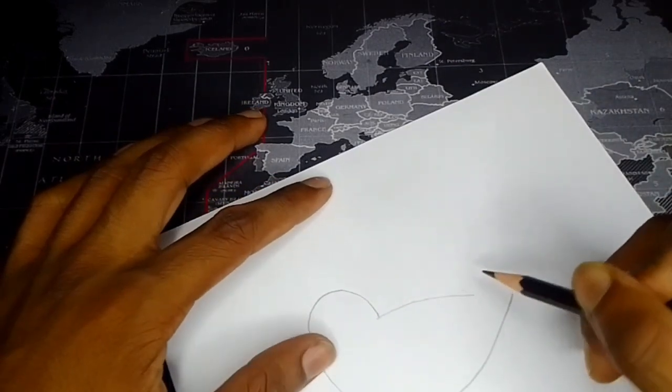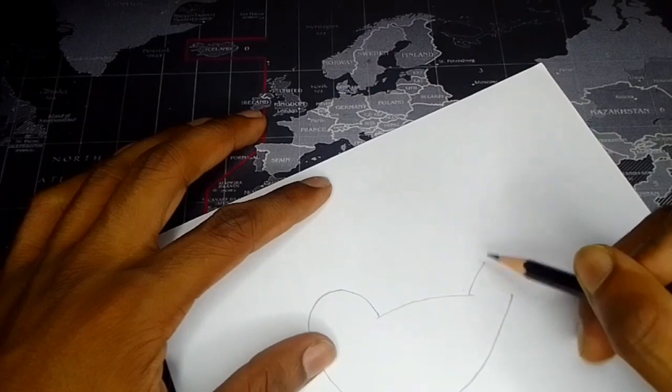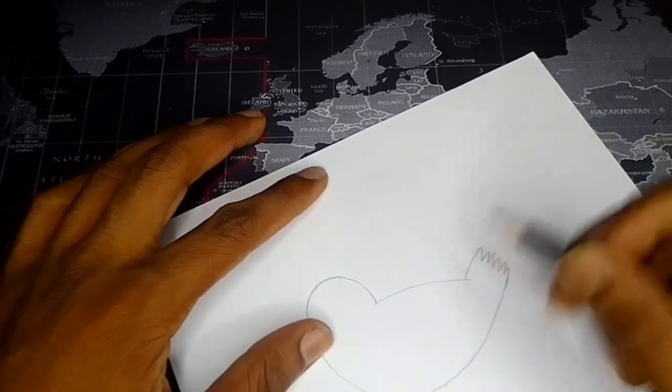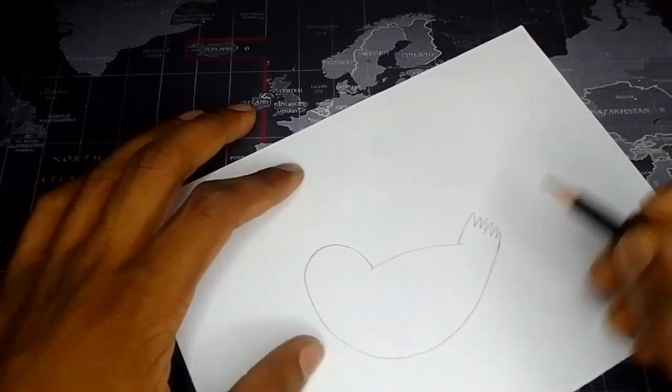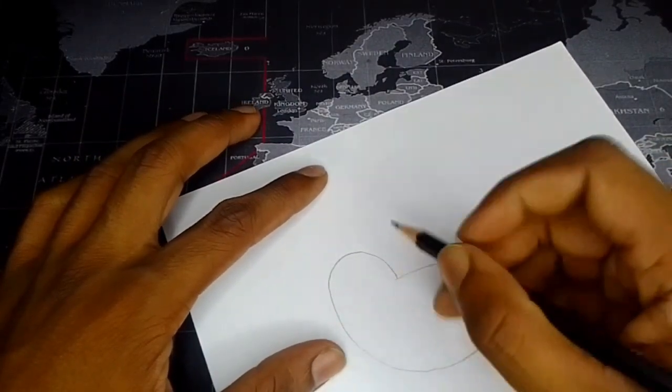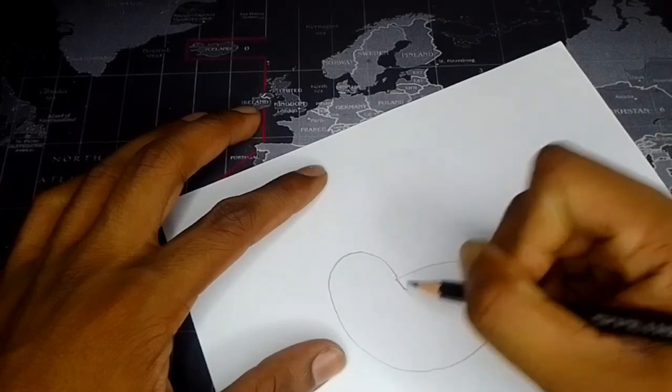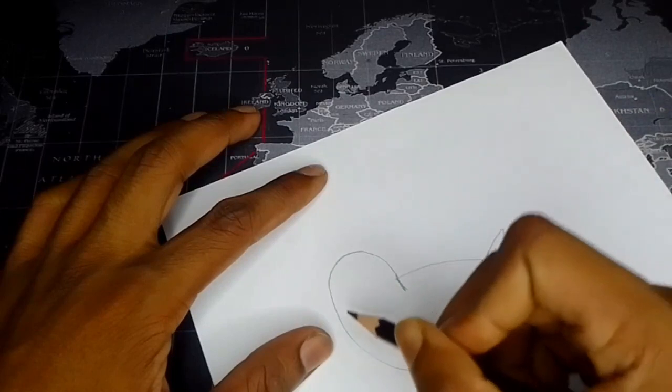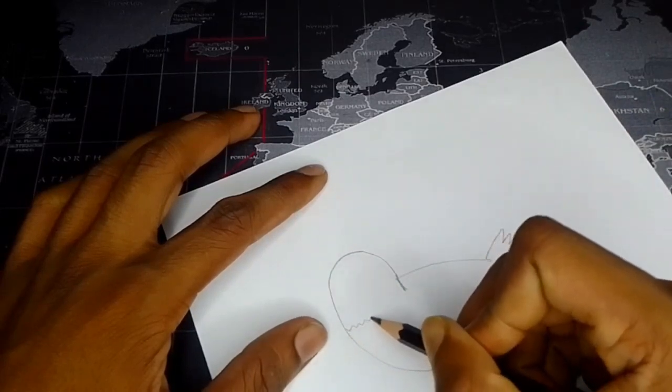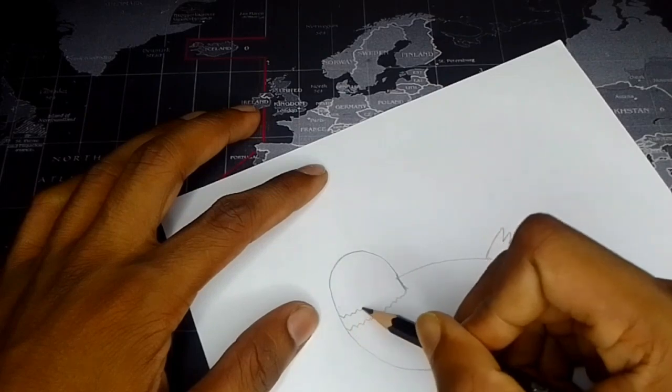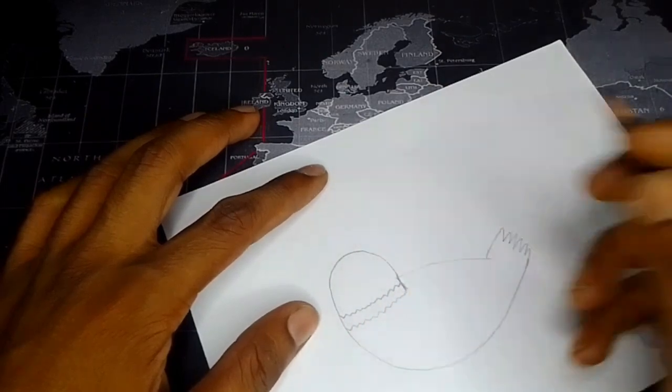And then go like this and make this one. Now what you're going to do is draw just like this, make this one a little lower, and then make another curved line.